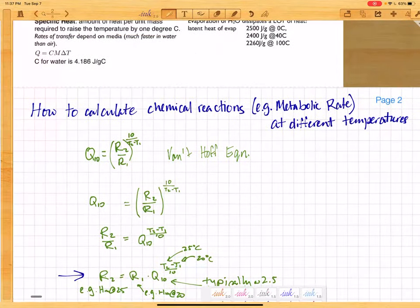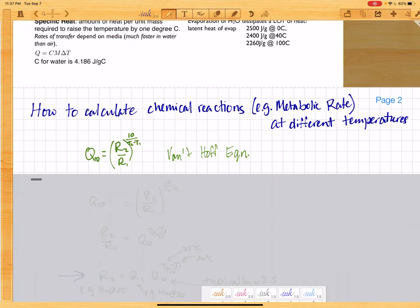We take the Van't Hoff equation here. Generally, we will know what the Q10 is, and for most biological reactions it's about 2.5. It's a dimensionless number because what it is is really just the ratio - it's a ratio of two rates raised to an exponent determined by the temperatures.